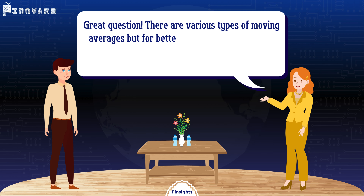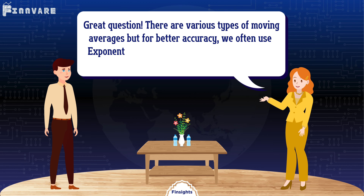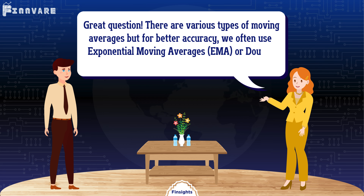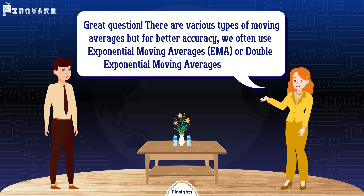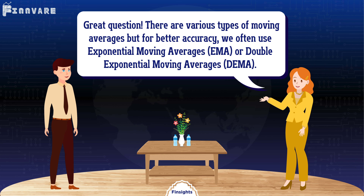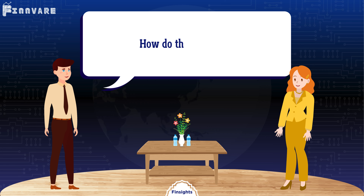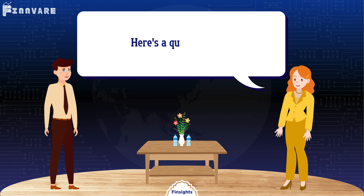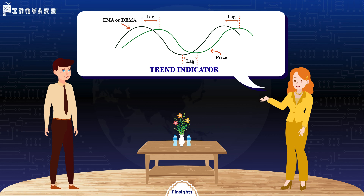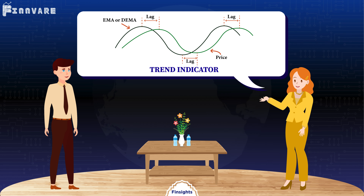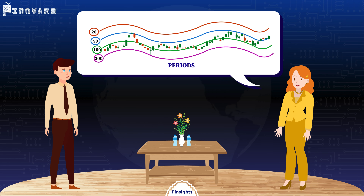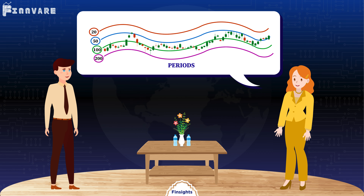For better accuracy we often use exponential moving averages, EMA, or double exponential moving averages, DEMA. Both EMA and DEMA are trend-following lagging indicators. We typically use 20, 50, 100, and 200 period EMA or DEMA.